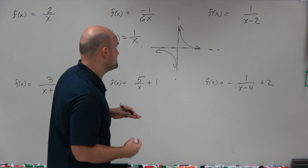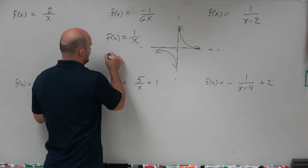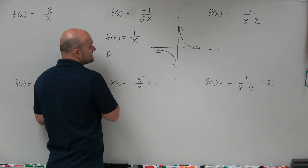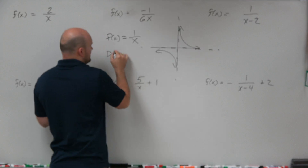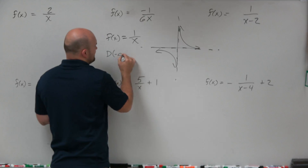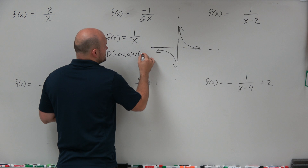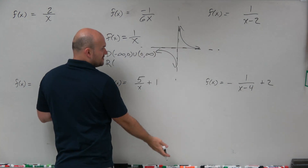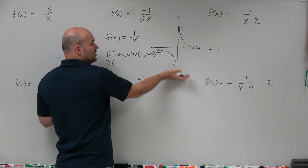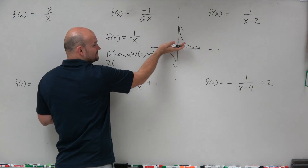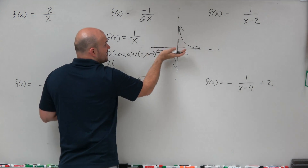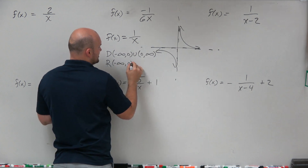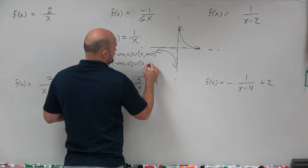When we're looking at the domain, it's going to be all real numbers except for 0. So it'd be from negative infinity to 0, union 0 to infinity. And when we look at the range, it's going to go from negative infinity all the way up to the asymptote at 0, and then all the way up to infinity — so again, negative infinity to 0, union 0 to infinity.